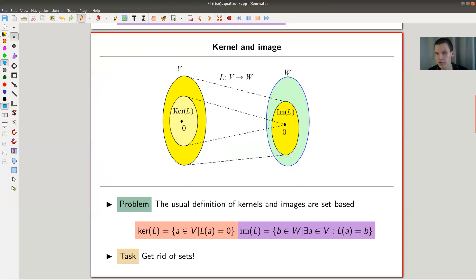You know how this looks. The kernel is this description and the image is this description. The kernel is a certain set, and my operator here is L, and it's a set of all elements that are sent to zero by L, which is not a really good description. Image has a slightly different description, kind of the dual one. It's more complicated, but again set-based. And whenever you have something set-based, it's not clear how that should work in category theory. The main task here is to get rid of the sets.